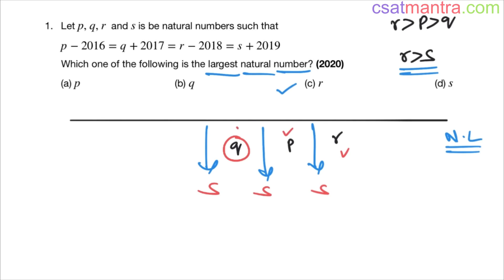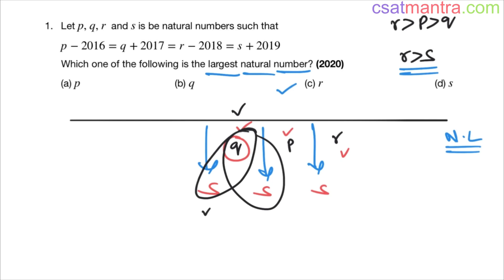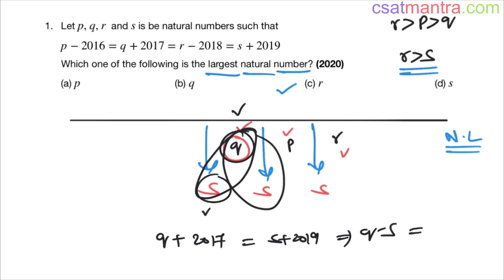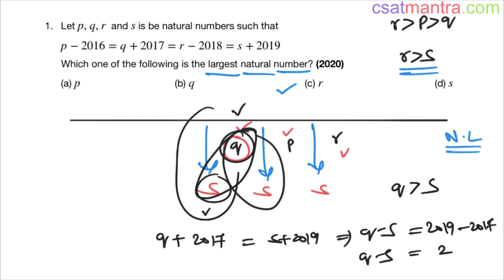As of now q is the smallest among r, p and q. Let's find the relationship between q and s. q plus 2017 equals s plus 2019, so q minus s equals 2019 minus 2017, which is 2 — essentially positive. That means q is greater than s, so s is behind q on the number line. Therefore s is the smallest.